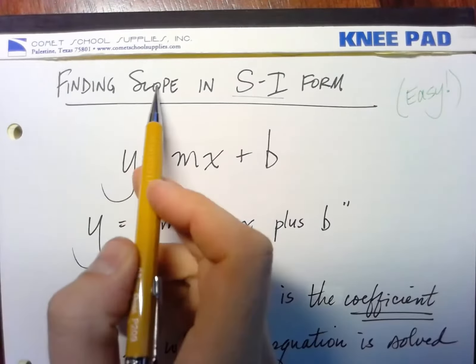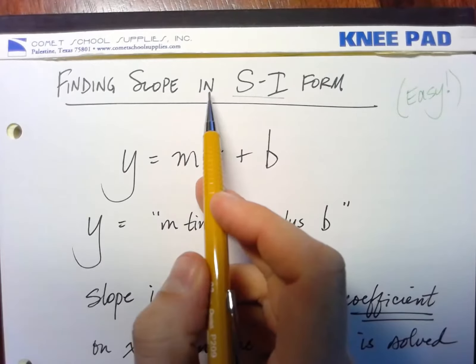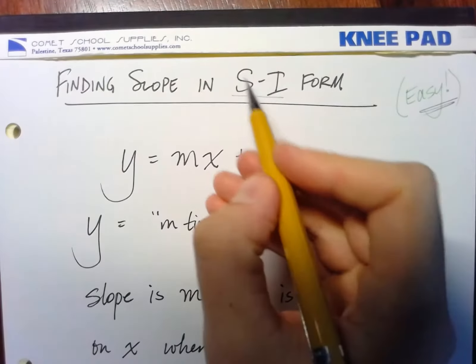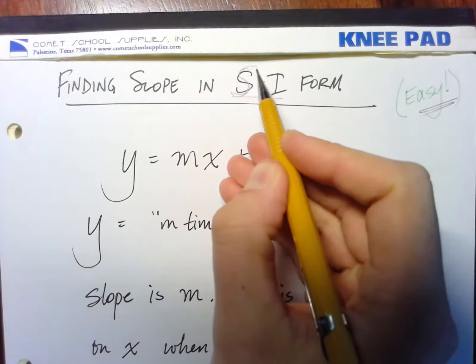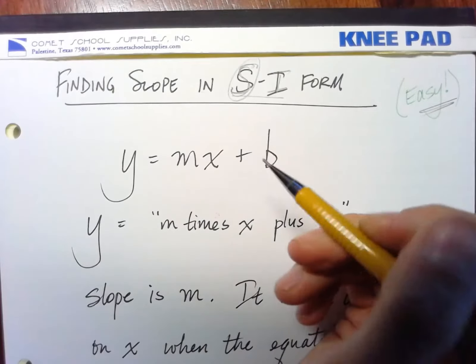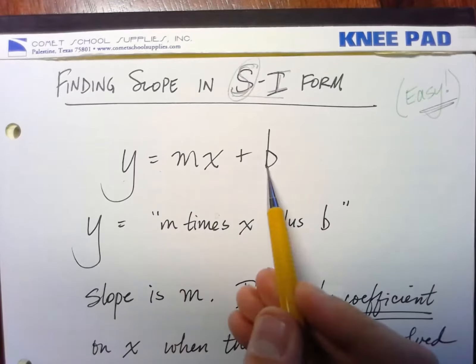And we're going to try to find the slope when an equation is given to us in slope-intercept form. And this is really easy because the S is slope. Slope-intercept. And we're trying to find the slope. Well, it's right there. Y equals mx plus b.